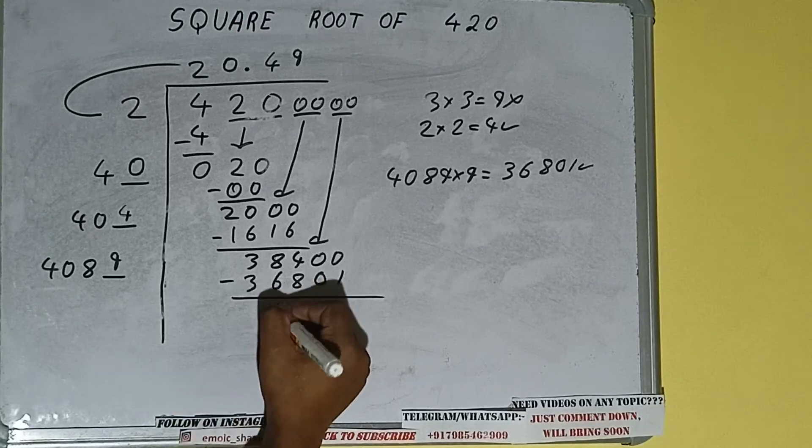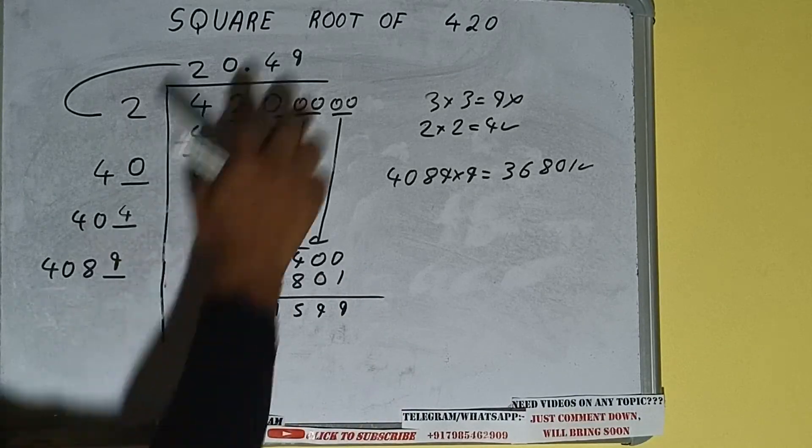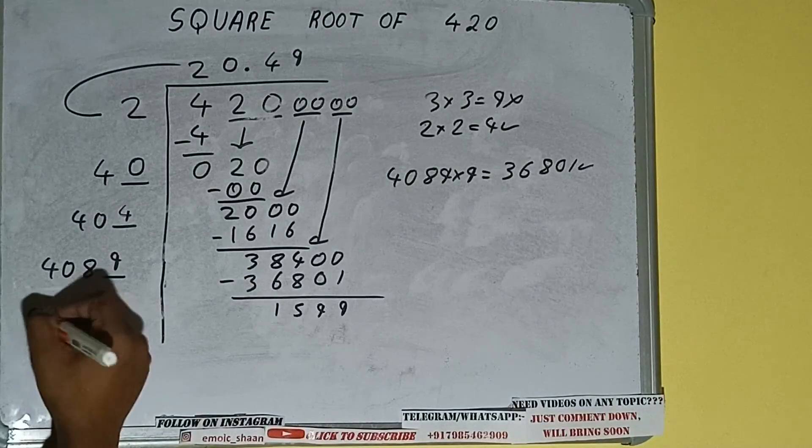And we'll be left with 1599. Now 4089 into 9 we did, so add both. So 4089 plus 9 will be 4098.